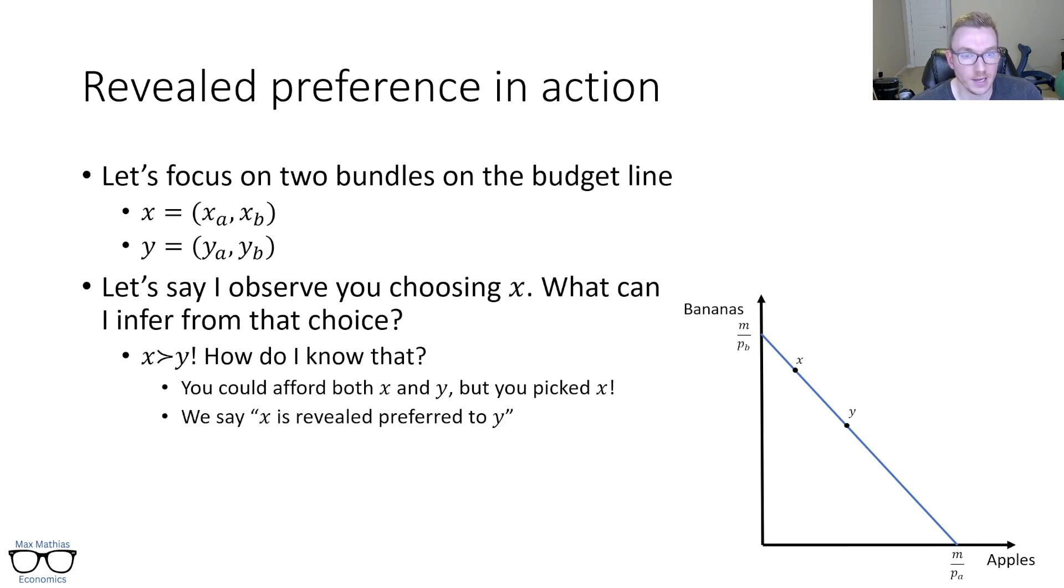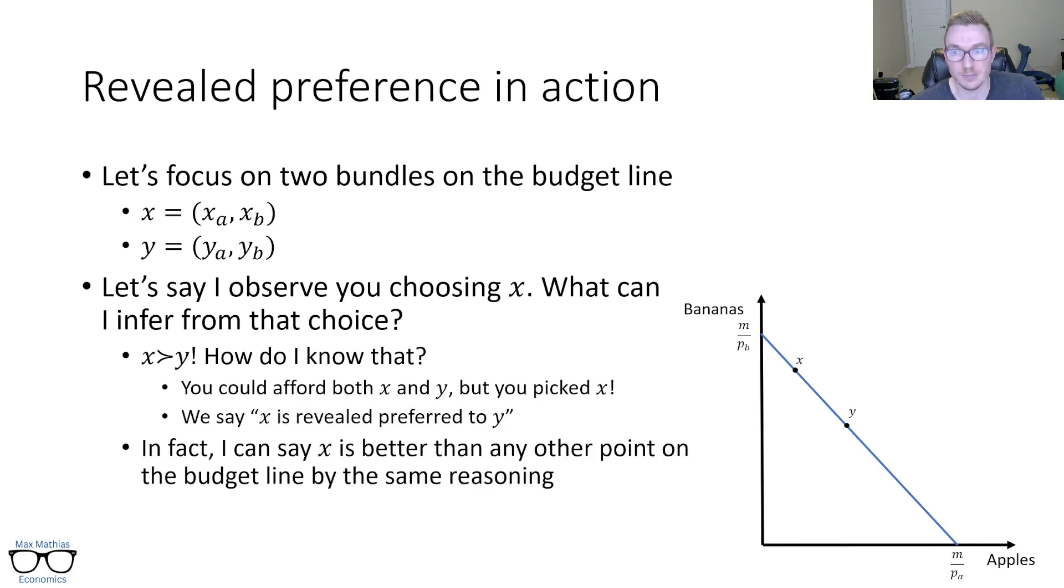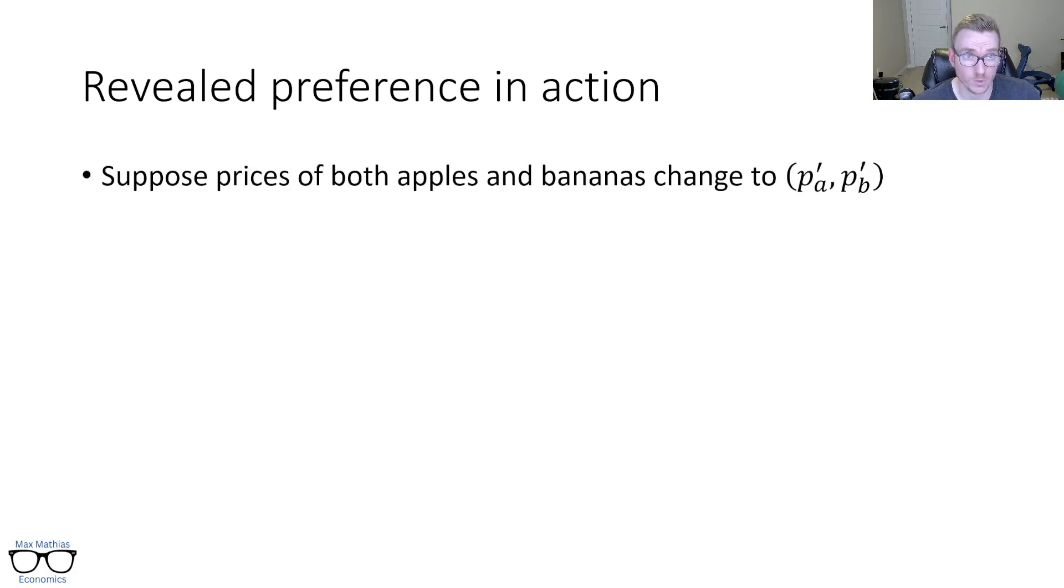I can even go further than that. I can say X is better than any other point on that blue line because all of those were affordable, but you didn't buy them. You chose X. So X we'd say is revealed preferred to not only Y, but to everything else on that blue line.